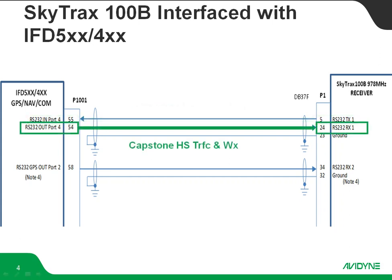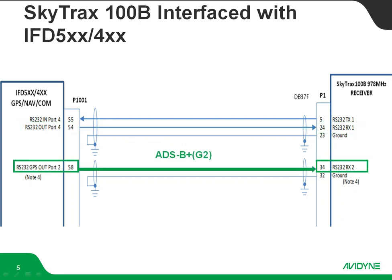The other side of that RS-232 pair is also capstone high-speed traffic and weather going back — this is more of the control line coming back from the IFD. Last, we have our GPS out going to the Skytrax 100B to give a certified GPS position. We recommend ADS-B plus G2 from the IFD side.